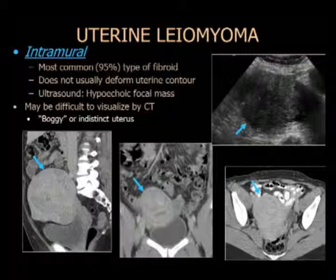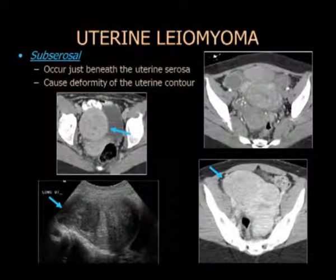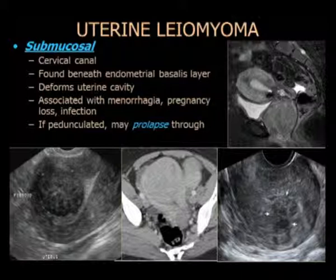Como recordatorio de las características de los leiomiomas: la forma intramural frecuentemente no se ve el mioma directamente, sino un útero mal contorneado y grande. La RM y el ultrasonido muestran fibromas intramurales típicamente, pero en la TAC se ven lesiones mal perfiladas. Los fibromas en la subserosa presentan deformación del contorno uterino con masas pedunculares. Los de la submucosa llegan con aumento del sangrado y complicaciones en el embarazo; pueden ser pedunculados, hacer prolapso en el cuello y causar dolor abdominal agudo.